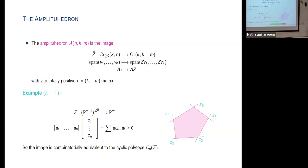When m=4, this is of most interest to physicists because it corresponds to what's called N=4 super Yang-Mills theory. When m=2, this is also of interest to physicists. I will be talking about m=1, which is of interest to mathematicians.